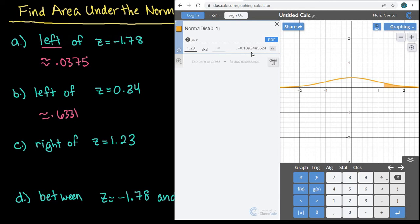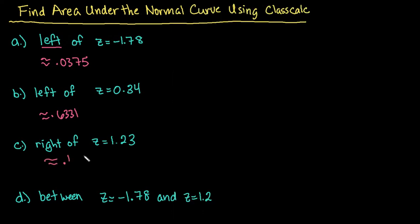And I can see that 0.1093 would be my value, or my area, to the right of a z-score of 1.23.